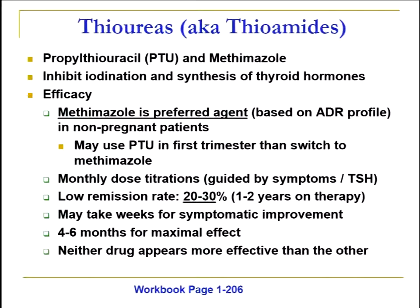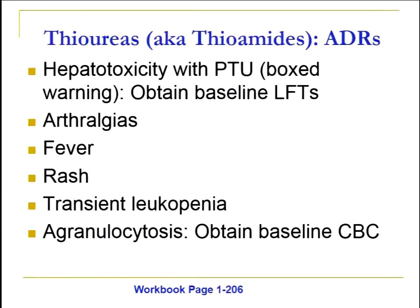The drugs we use haven't changed in a very long time. PTU and methimazole inhibit the iodination and synthesis of T3 and T4 in the thyroid gland. Based on current recommendations, methimazole is the preferred agent based on its ADR profile compared to PTU. It usually requires monthly dose titrations guided by symptoms, TSH level, and free T4. By itself, it doesn't work exceptionally well, but it will put most patients into remission after one to two years of therapy. It may take several weeks for symptomatic improvement, and maximal effect may not be seen for up to four to six months. Neither drug is more efficient than the other, but PTU has been associated with hepatotoxicity — hence why methimazole is considered the drug of choice.